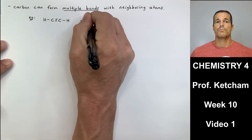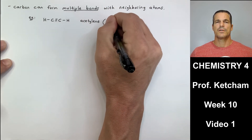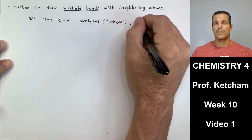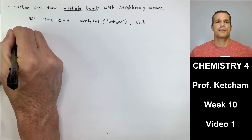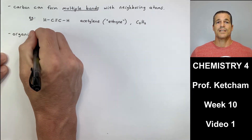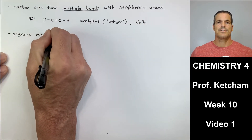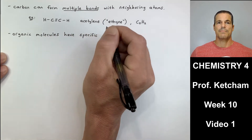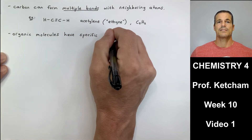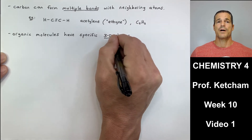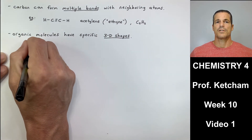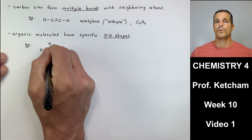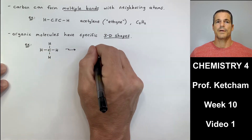Carbon can form multiple bonds — either a double bond or a triple bond. Here's an example: acetylene, with IUPAC name ethyne, C2H2, which has a triple bond. There are also lots of double bonds, and those are all multiple bonds.